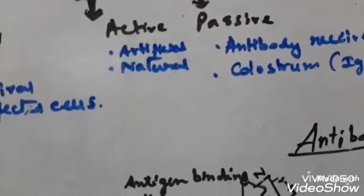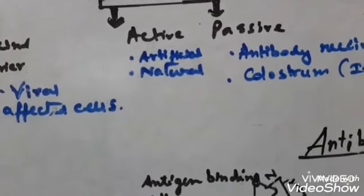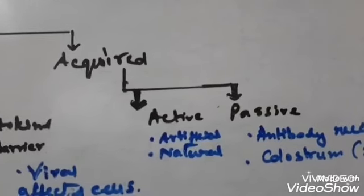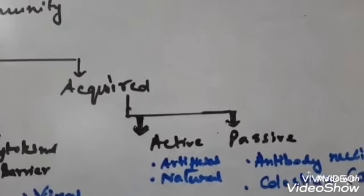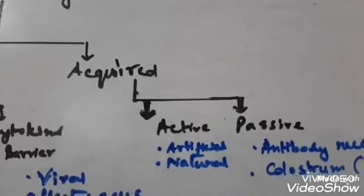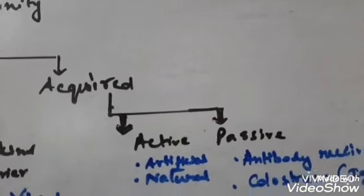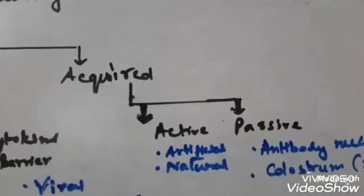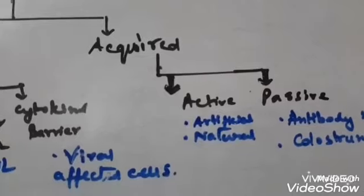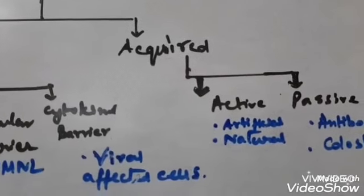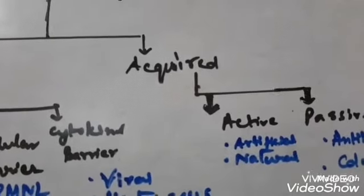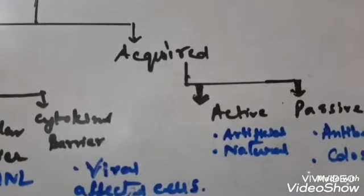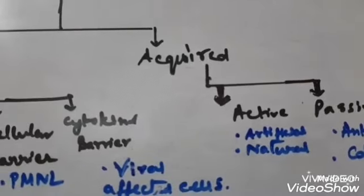Active immunity is divided into two types: artificial and natural. It is a slow process but long-lasting, with no significant side effects. Artificial immunity is produced during vaccination. Natural immunity develops during natural infection, when the body encounters an infection and builds immunity against that particular disease.